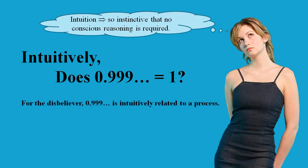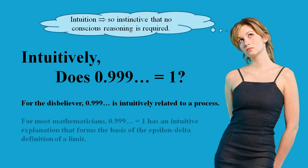For a disbeliever, intuitively, 0.9 recurring must be process related. But for most mathematicians, 0.9 recurring equals 1 has an intuitive explanation that forms the basis of what's called the epsilon-delta definition of a limit.